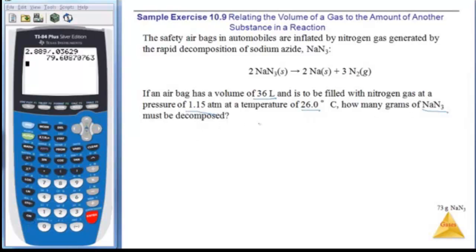Okay, so this is a stoic problem. It's a stoic problem, and it's a PV=nRT problem. So I first have to figure out how many moles of this I have. And once I know how many moles of this I have, I can use stoic to figure out how much of this I need.